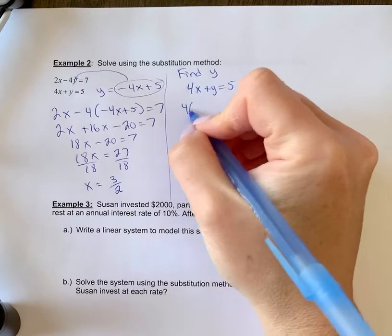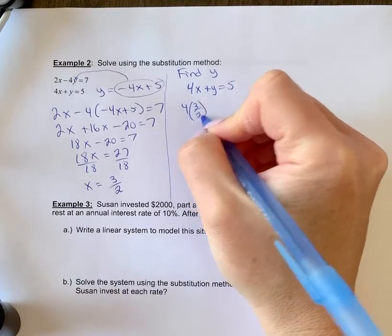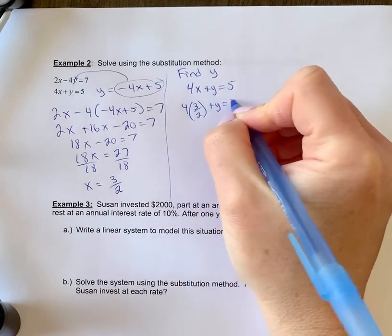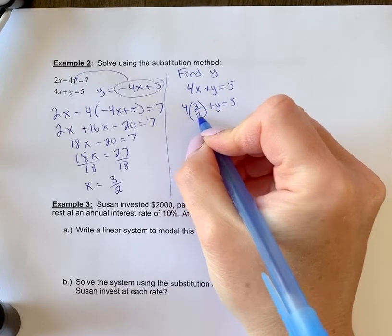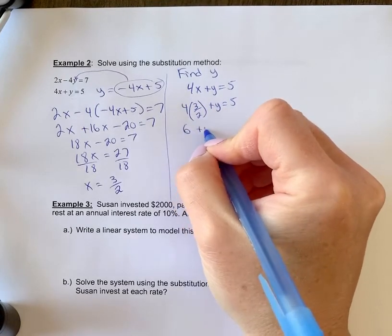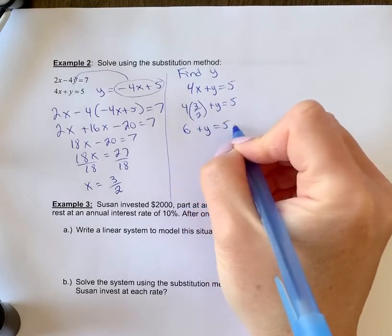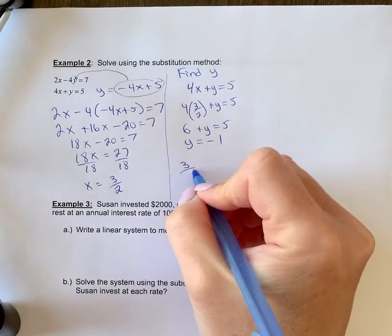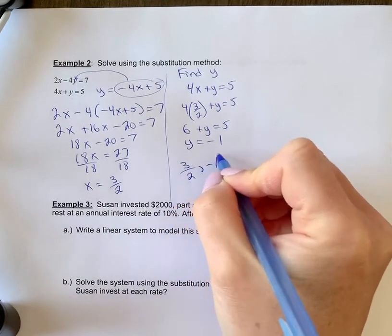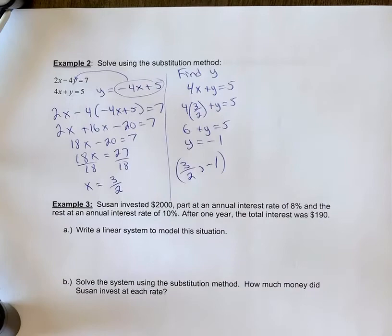We're going to plug in 3 over 2 for x. We get 4 times 3, so 12 divided by 2 is 6. So we get 6 plus y equals 5. Move 6 to the other side, y equals negative 1. So my ordered pair is 3 over 2 comma negative 1. Make sure you put brackets around that.